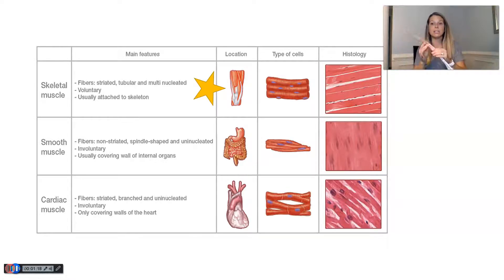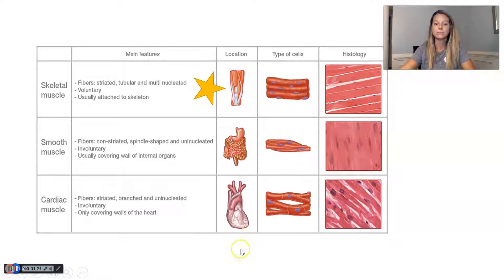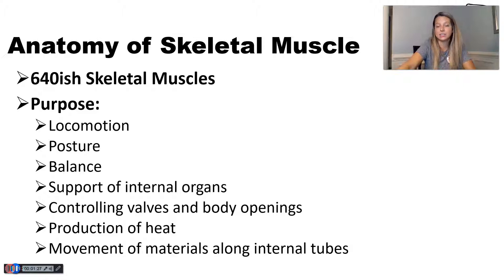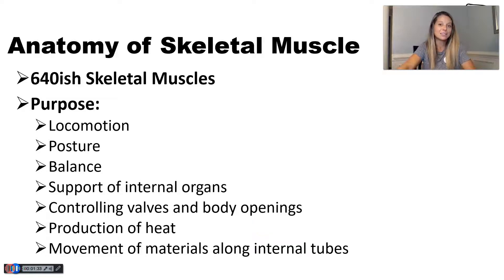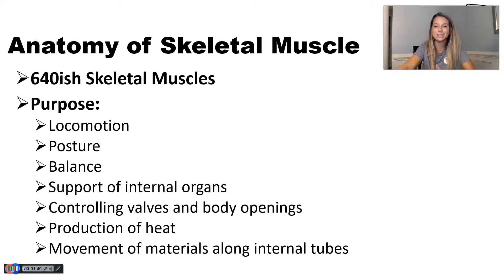There are somewhere around 640-ish skeletal muscles — I say 'ish' because that number is kind of up for argument depending on who you ask. If you ask a muscle specialist, they'll tell you there are somewhere around 800-something skeletal muscles, but for our sake we're going to say around 640 to 650.